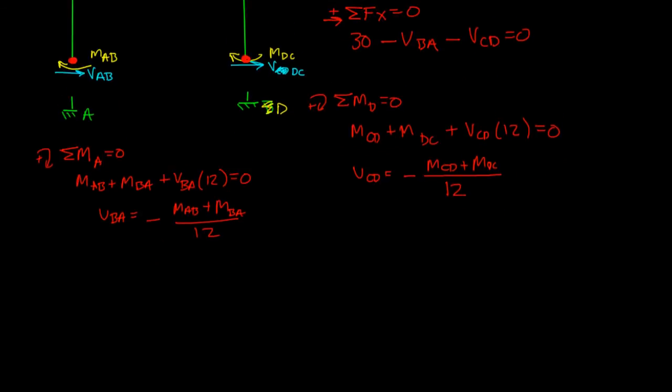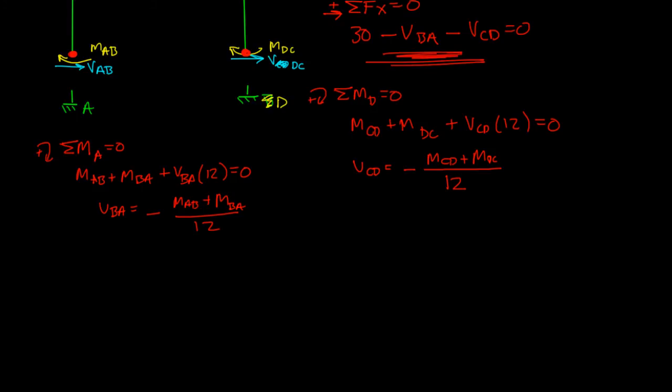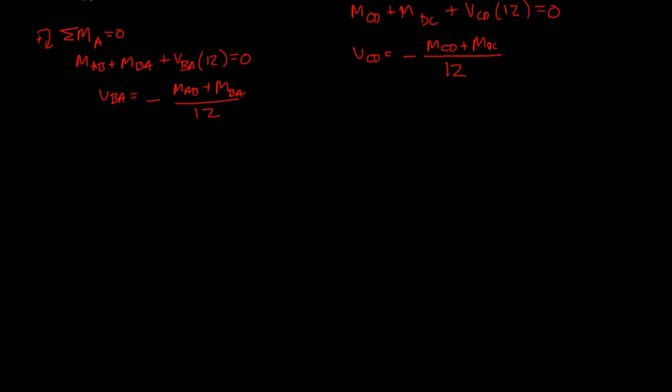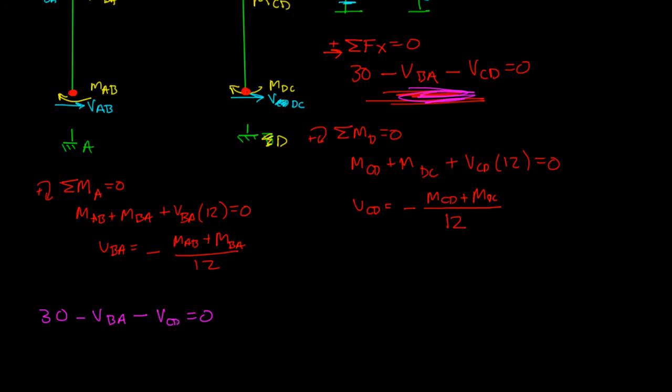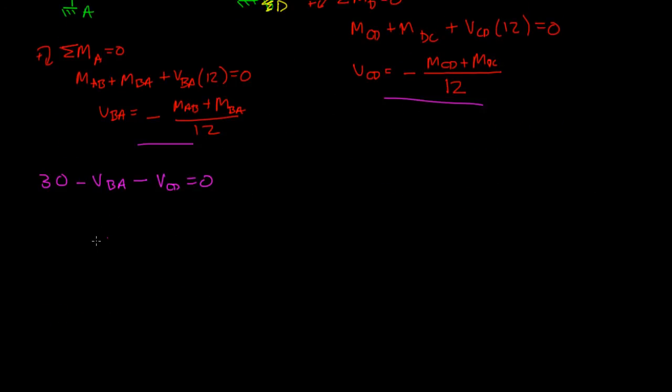Now, we can take these two shears that we found, and we can plug them into this equation here. Let's do that in a different color. So, let me just rewrite that equation down here so we have a little bit more space. So the equation was 30 minus VBA minus VCD is equal to 0. It's just the same equation. And here we actually figured out what VCD and VBA were. So, I can plug that in.